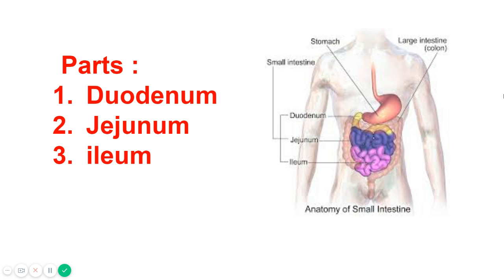The duodenum is about 20 to 25 centimeters long, which leads into the jejunum and then the ileum. When chyme passes from the stomach into the duodenum, its acidity stimulates the release of secretions from the pancreas, liver, and duodenum cells.